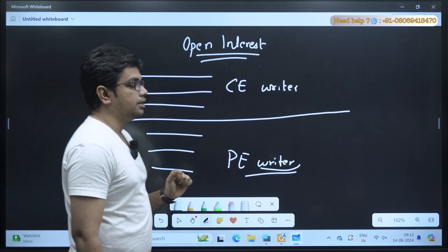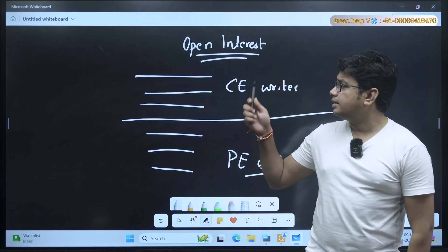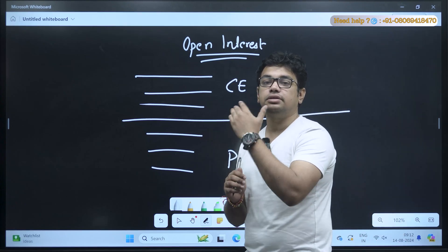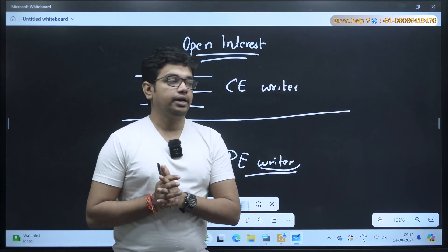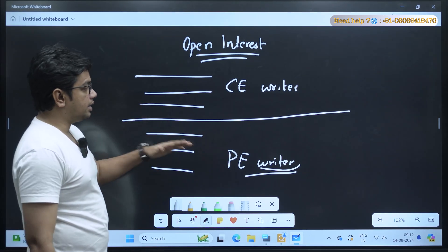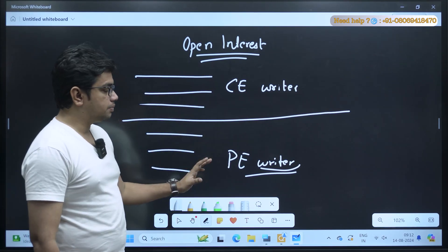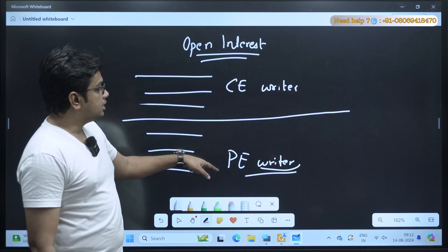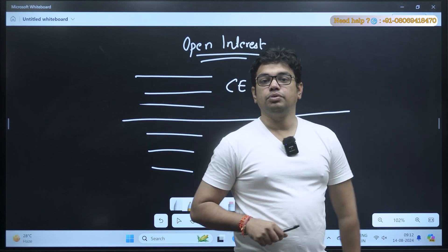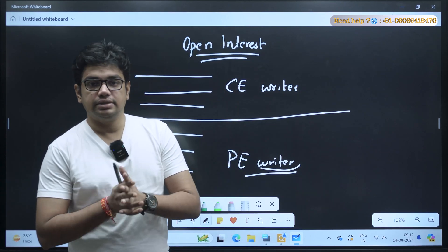If they are writing the call option here, it means they have a perception that this particular stock will not move beyond this particular level — it will not breach this level. Similarly, when they write the put option, they have a general perception that the stock might not breach that level either. That is why these call writing and put writing levels are considered strong resistance and support.